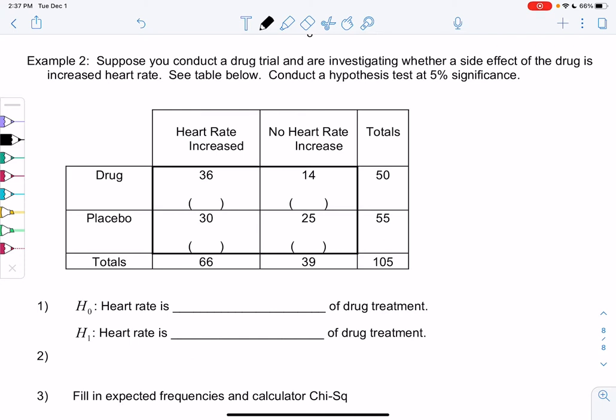We have a table below. Within our group we had 105 people. It looks like we had 50 people take the drug, 55 people take the placebo, and then we just recorded if their heart rate was increased or not. And that will help us figure out if it's a side effect.